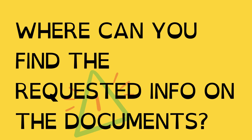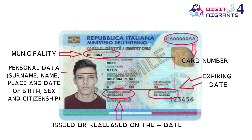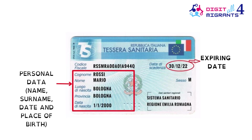Where can you find the requested information on the documents? Card number, expiring date, issued or released on, plus the date, municipality, personal data: surname, name, place and date of birth, sex and citizenship. Expiring date, personal data: name, surname, date and place of birth.